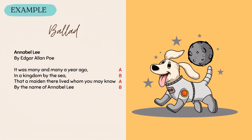Here's an example of just one stanza from Edgar Allan Poe's poem, Annabel Lee: 'It was many and many a year ago, in a kingdom by the sea, that a maiden there lived whom you may know, by the name of Annabel Lee.' This is the first stanza of that poem, and it follows a rhyme scheme of A-B-A-B, because the first line rhymes with the third line and the second line rhymes with the fourth line.